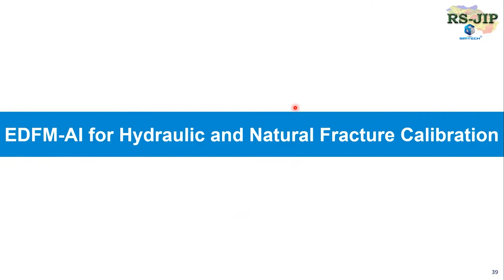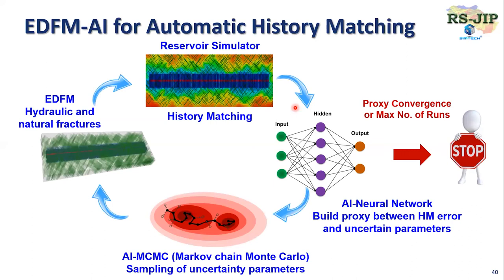The next key technology is EDFM-AI. We try to calibrate hydraulic and natural fracture properties. We have worked on EDFM-AI for more than five years. We have a fracture geometry — we can generate it or couple your fracture geometry — and embed it in a reservoir simulator. Then we use machine learning, including deep machine learning, and do smart sampling using MCMC. This process is iterative until the proxy model converges. In general, we run about several hundred simulations to get multiple history match solutions, saving a lot of time compared to manual history matching.